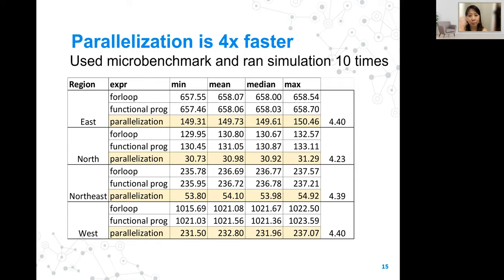We find that parallelization is four times faster than running the simulations serially. We used microbenchmark and ran the simulation 10 times for each different region and expression, and these are the results shown here.